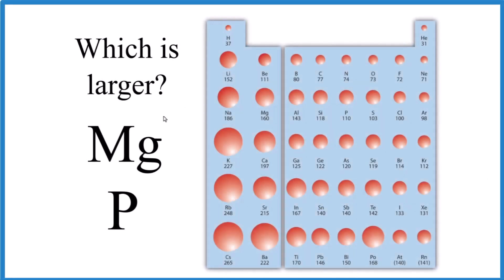Okay, so which one of these two atoms here, Mg or P, magnesium or phosphorus, has a larger atomic radius? And here's how we figure that out.